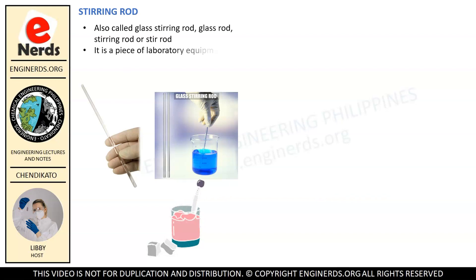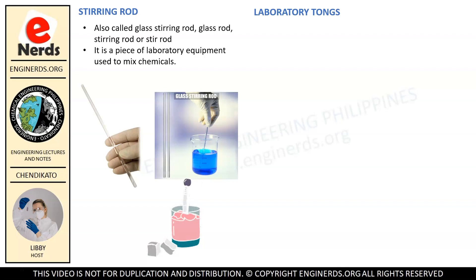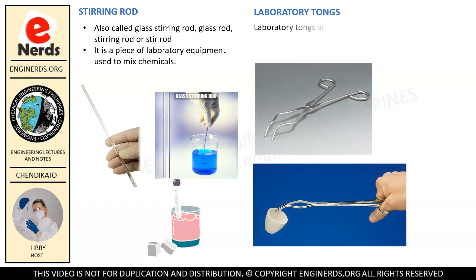We also have what we call a stirring rod, also called a glass stirring rod, glass rod, or stir rod. As the name implies, it is a piece of laboratory equipment used to mix chemicals.